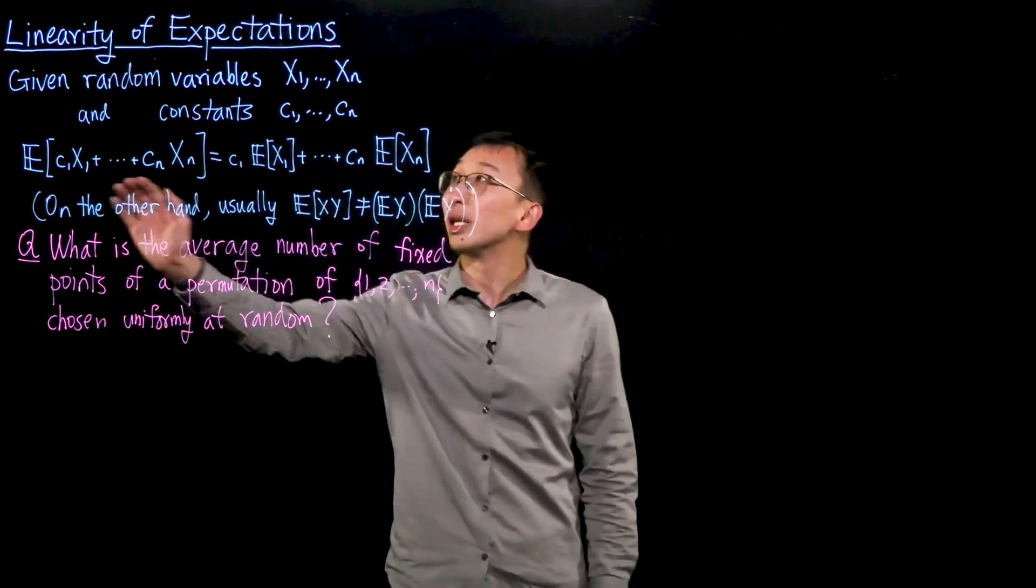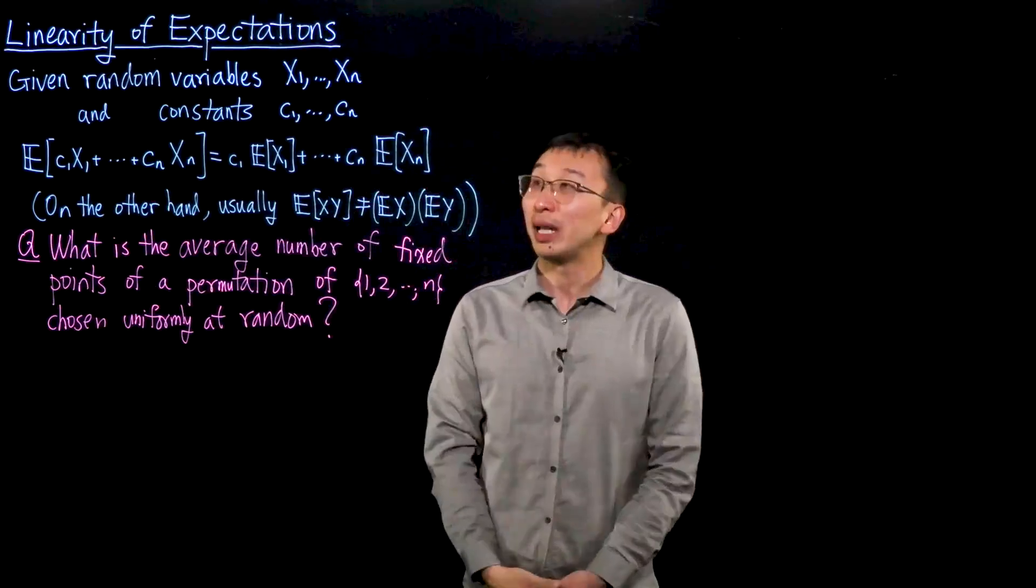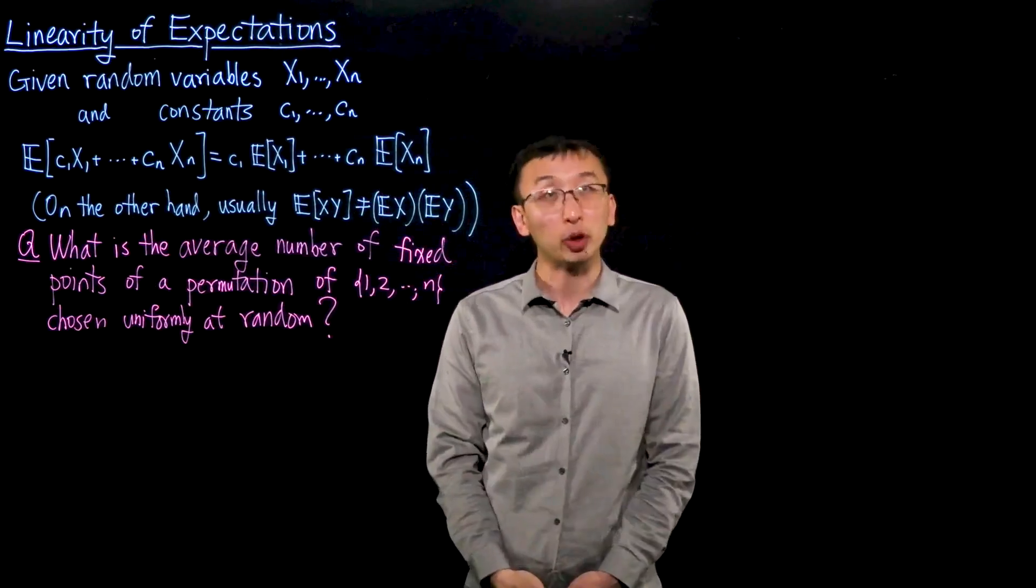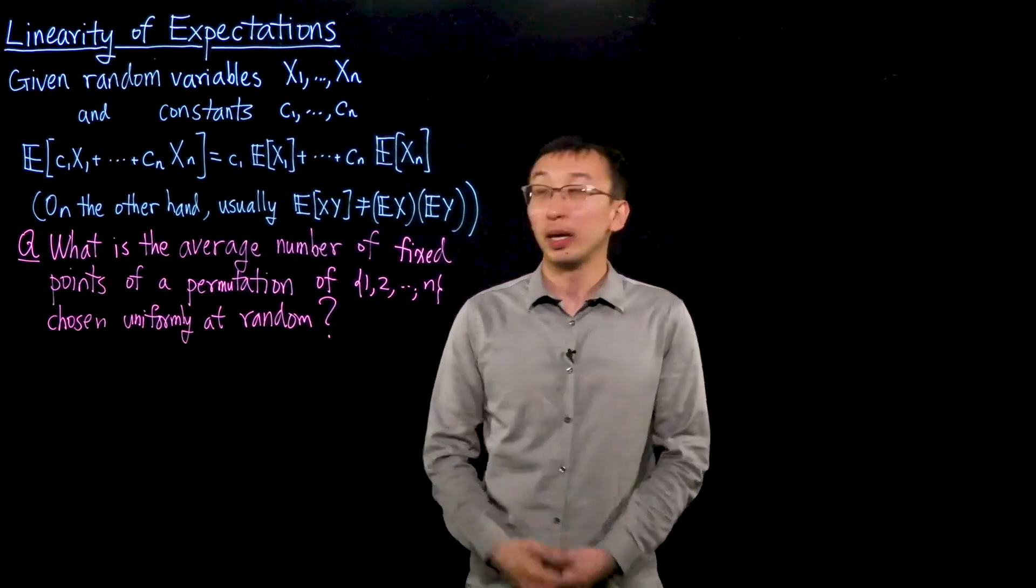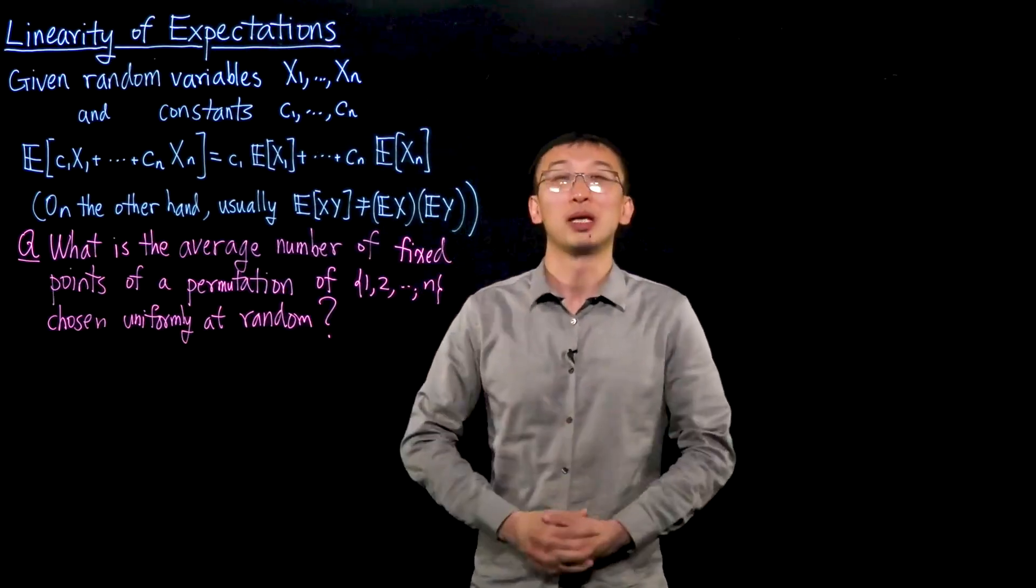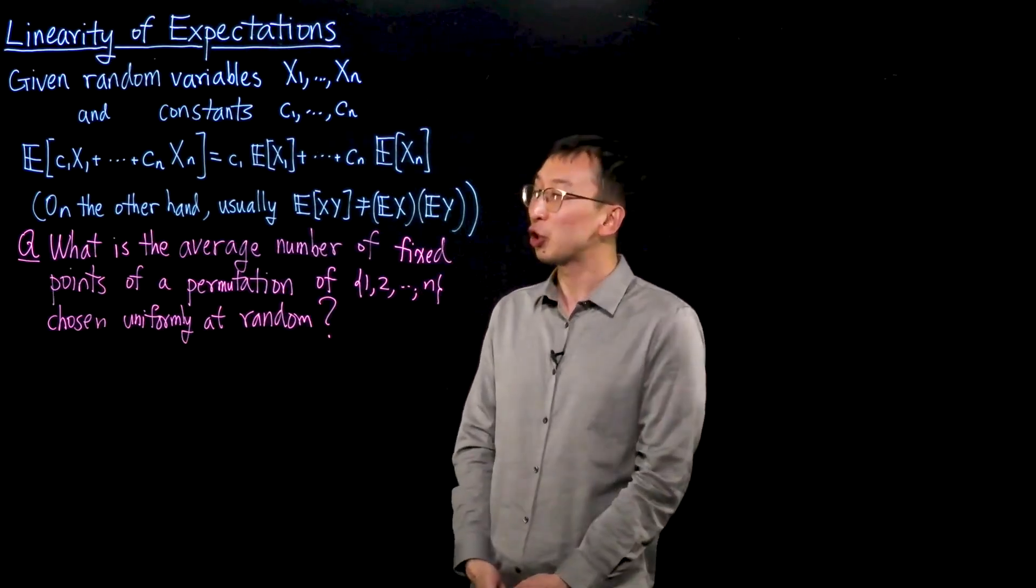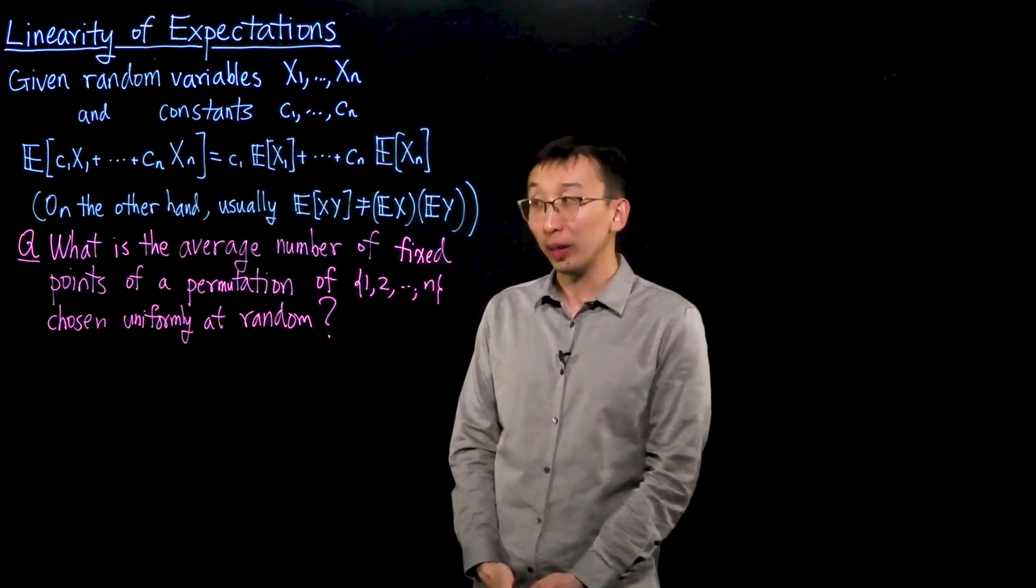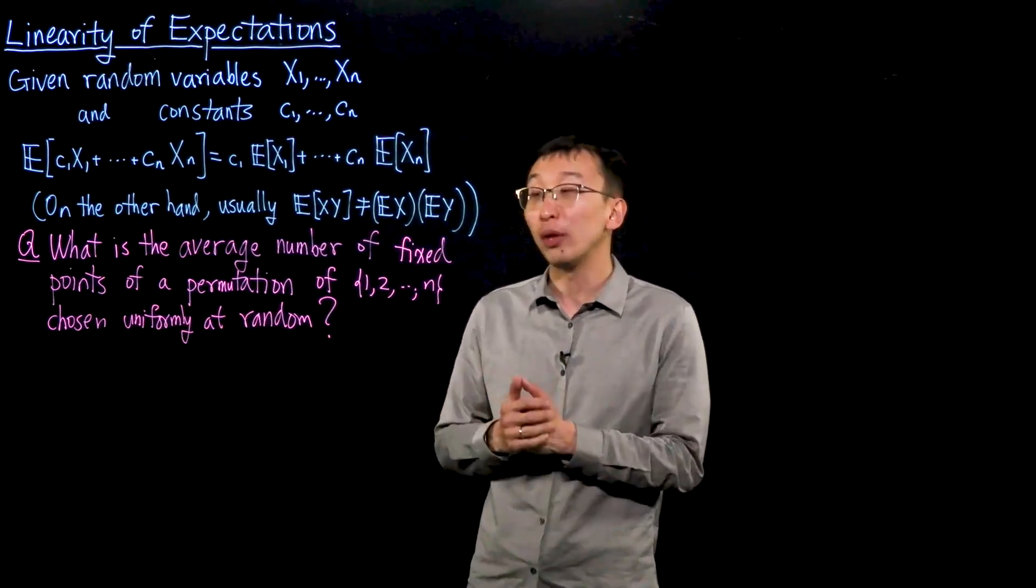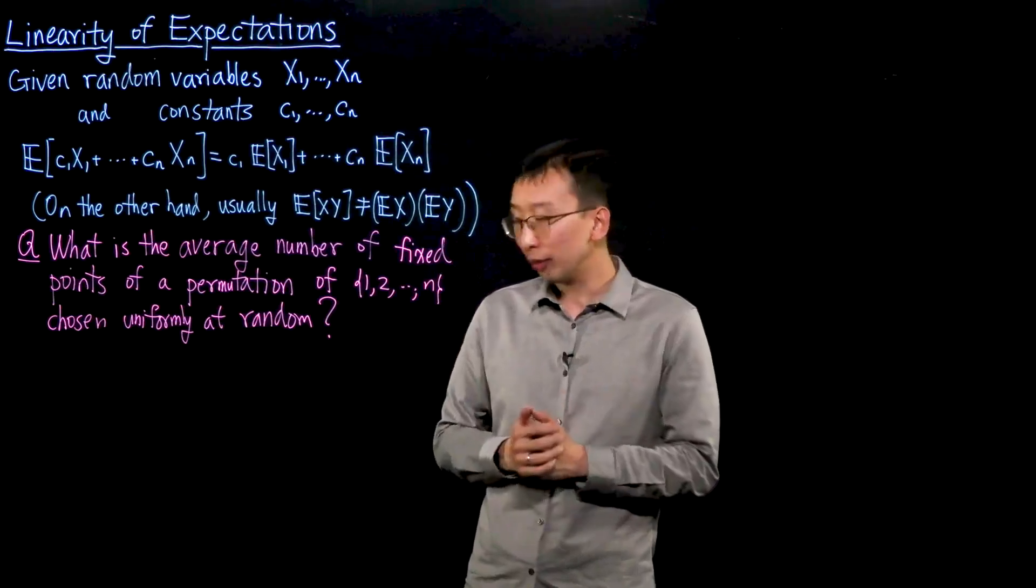Let us focus on the linearity of expectations and see some ways to use this in combinatorial applications. The first example is the following question, which will give a very quick and clean answer. What is the average number of fixed points of a permutation of 1 through n chosen uniformly at random?